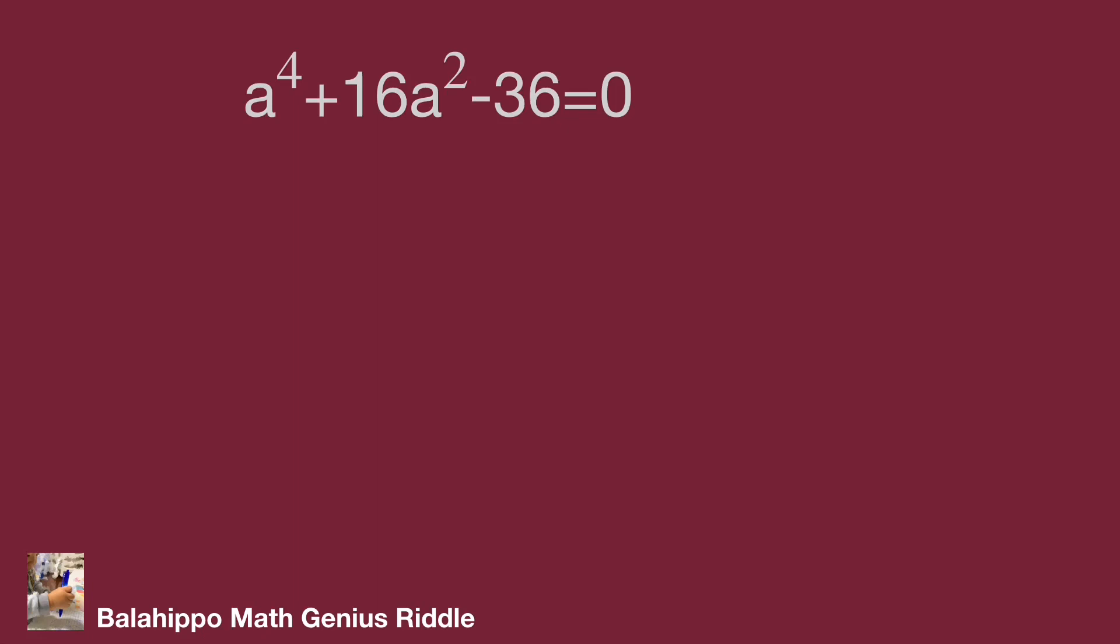Factorize the equation: we get (a² + 18)(a² - 2) = 0.